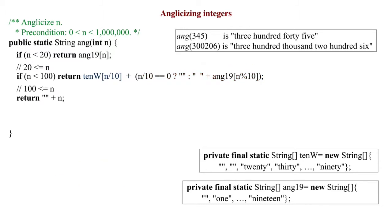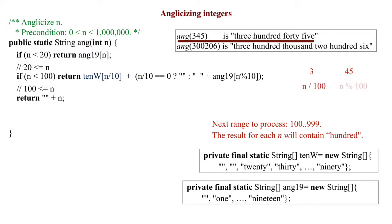The next range of numbers to process is 100 through 999. The string for each of them will have the text hundred in it. For example, for n equal 345, the result is three hundred forty five. From 345, we have to extract the 3 and the 45. We can do this using n div 100 and n remainder 100.